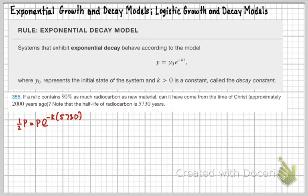Again, I used p instead of y naught. It doesn't really matter the variable you use, just make sure that you're okay with that. So, the first thing I'm going to do is divide by p both of these. So, I get one-half equals e to the negative 5,730 k.